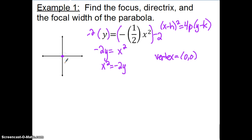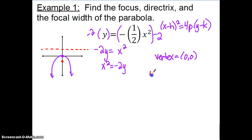I'll put the vertex at (0, 0) on the graph. We know the focus is inside the parabola and this opens downward, so I'll sketch the focus below the vertex and the directrix above it. We find p using 4p = −2, so dividing both sides by 4 gives p = −½. That is our focal length — the distance from the vertex to the focus.